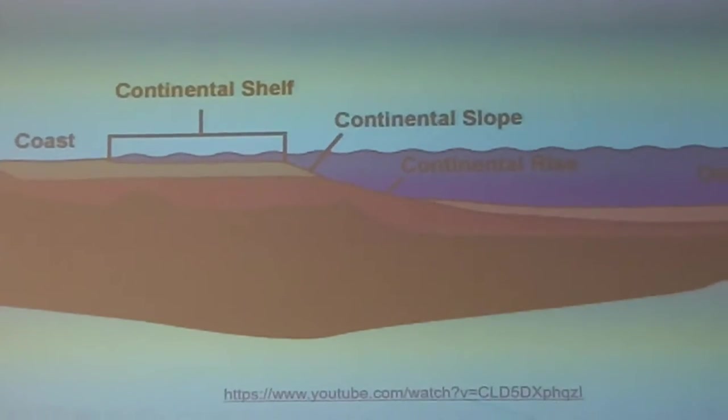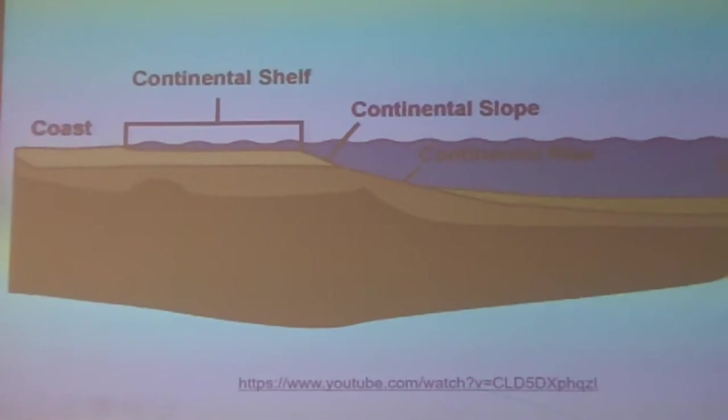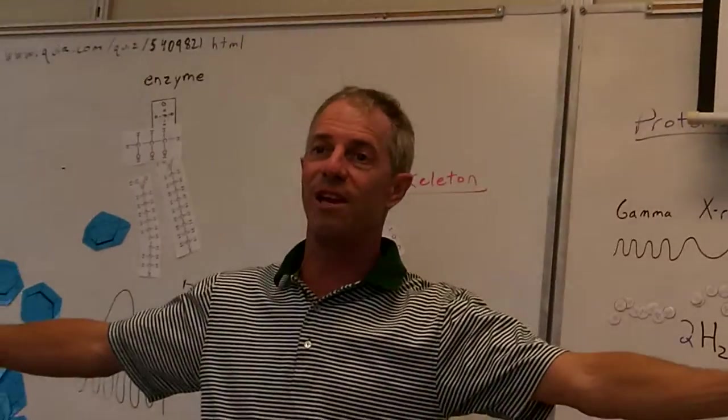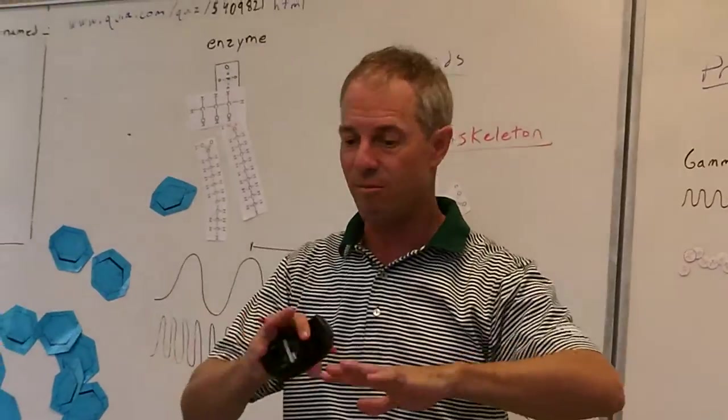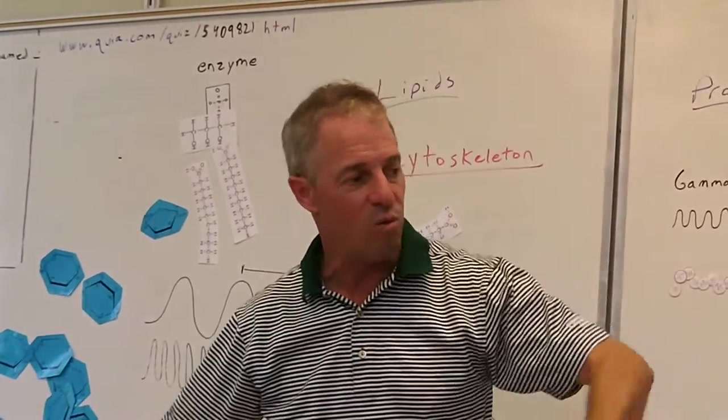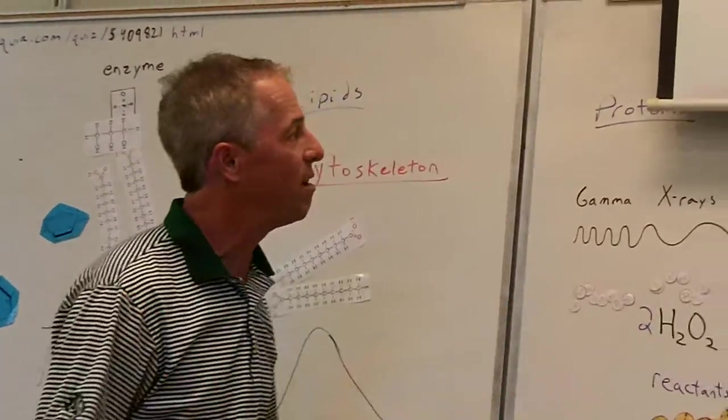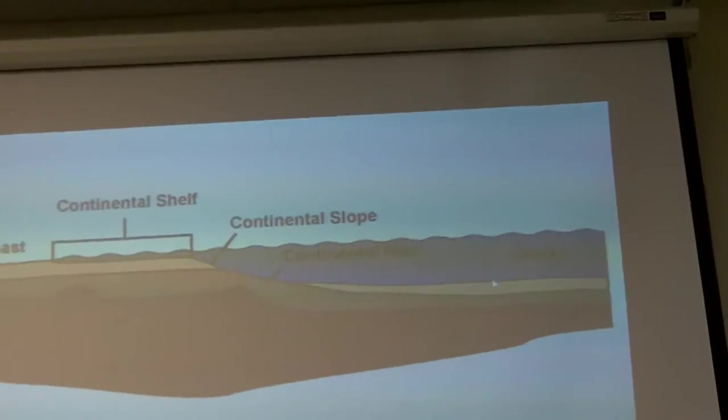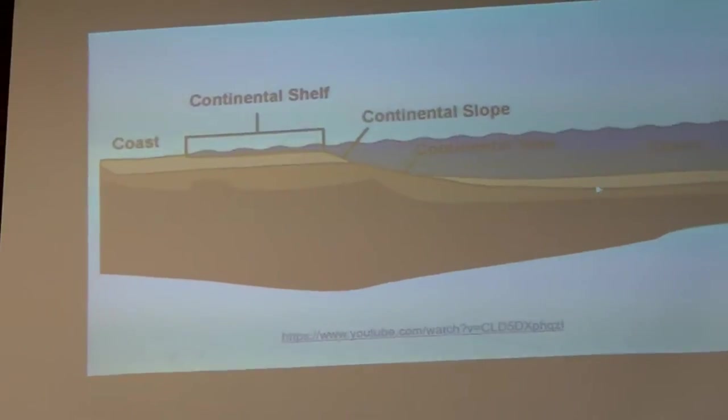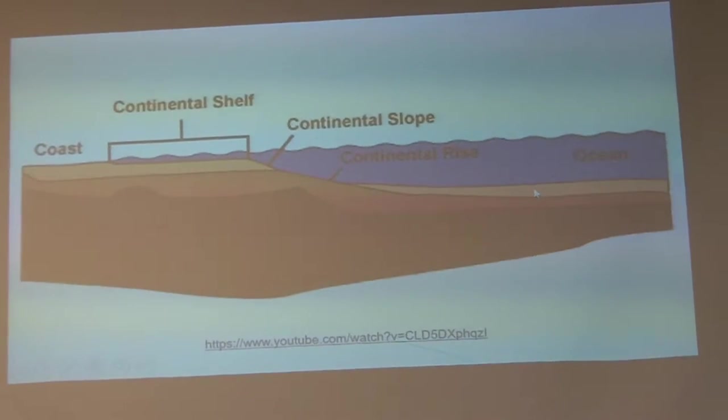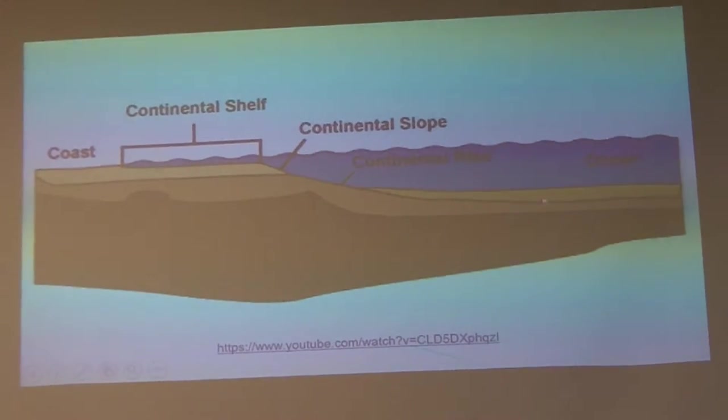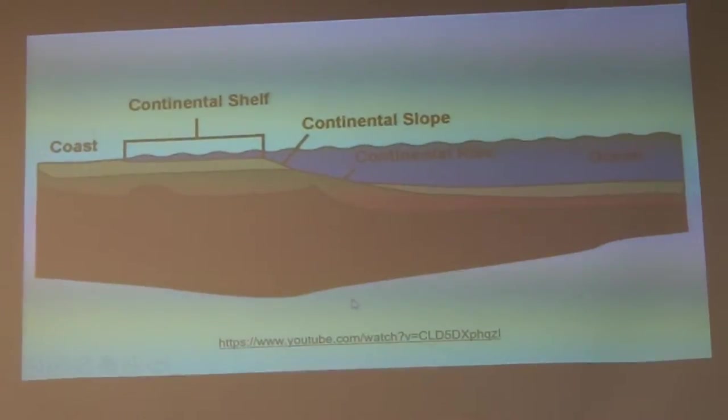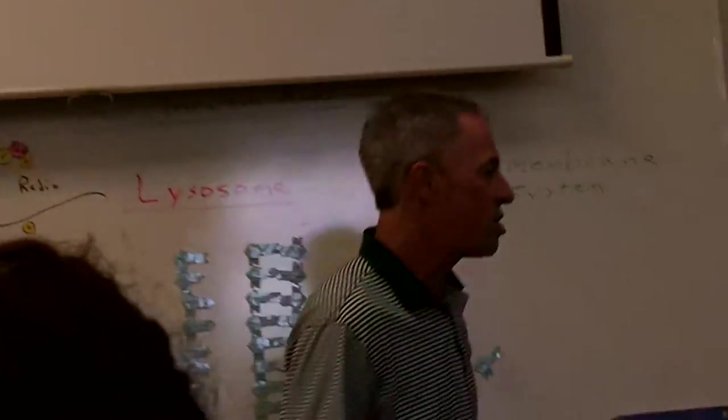And the abyssal plain, like it said in the video, if you watch that Drain the Oceans video, the abyssal plain is the largest area that we have on our planet. Most of the ocean, it's real vast, big, long, and pretty flat unless you get some sort of volcanic activity that rises up islands and such.